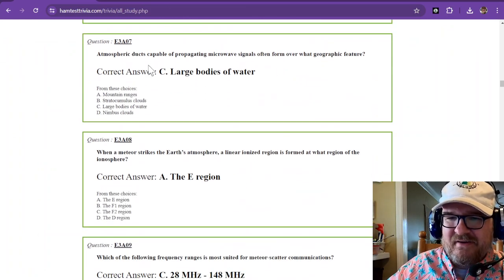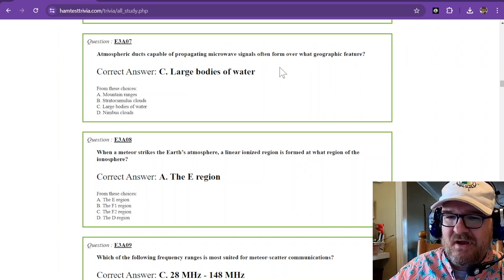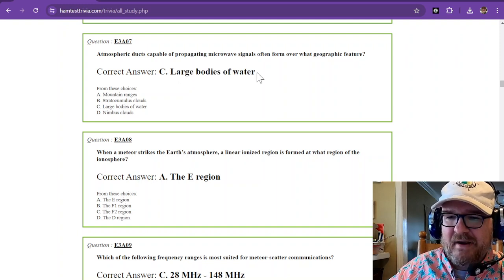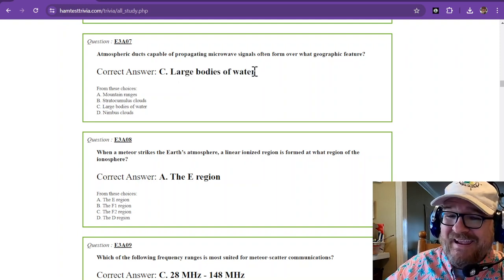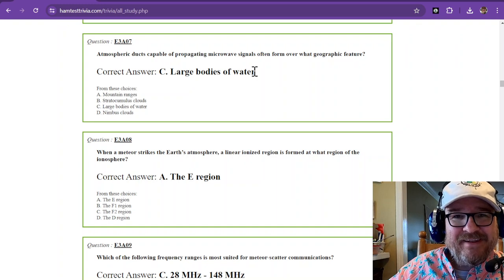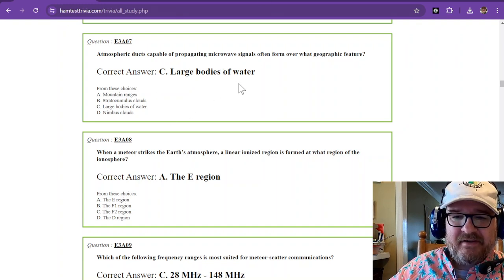Atmospheric ducts capable of propagating microwave signals often form over what geographic feature? Atmospheric ducts are going to happen over large bodies of water. Mainly, that's because large bodies of water tend to retain heat longer than air. So there's going to be a warming over large bodies of water.